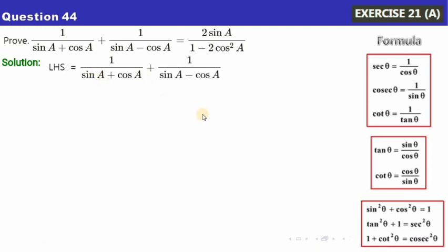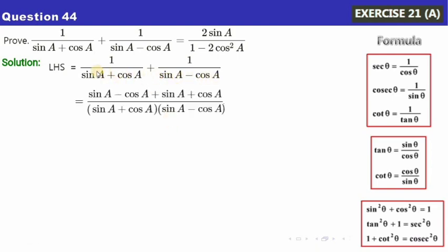Now let's take Question 44. Starting with the left-hand side, I'll find the LCM of the denominators: (sinA plus cosA)(sinA minus cosA). Dividing LCM by (sinA plus cosA) leaves (sinA minus cosA), multiplied by 1 gives sinA minus cosA. Dividing LCM by (sinA minus cosA) leaves (sinA plus cosA), multiplied by 1 gives sinA plus cosA. Adding: cosA and minus cosA cancel, giving 2sinA in the numerator.